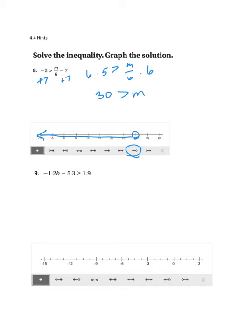For my next problem, I want to get this b term by itself. So I'm going to add 5.3 to both sides. I get negative 1.2b is greater than or equal to 7.2. Now I'm going to divide both sides by negative 1.2.